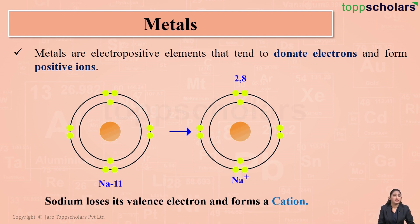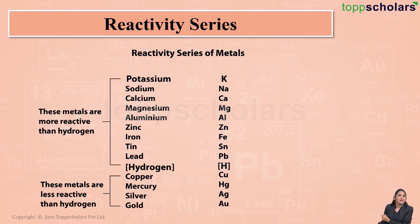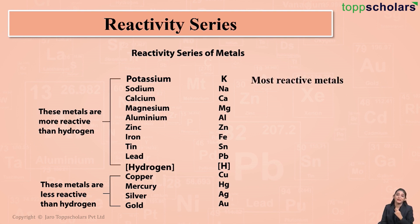But do all metals react in the same manner? That is where the reactivity series of metals comes in. The reactivity series is simply an arrangement of metals in the decreasing order of their reactivity. As you move from top to bottom, the reactivity of the metal decreases. The metals placed at the top are the most reactive, whereas the metals placed at the bottom are the least reactive.